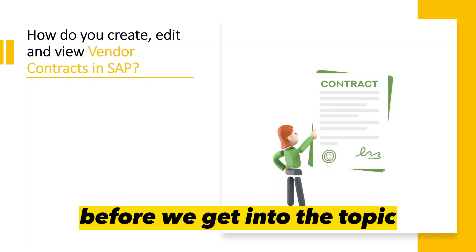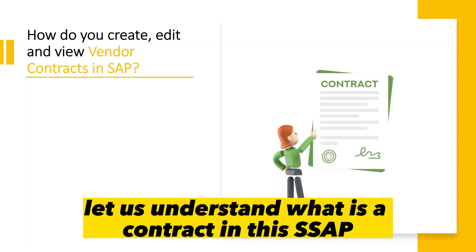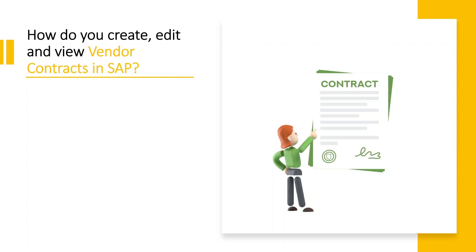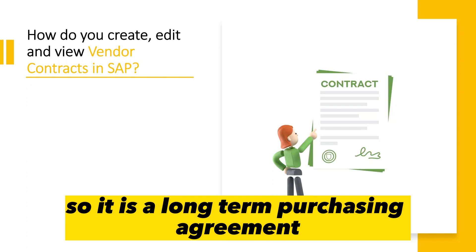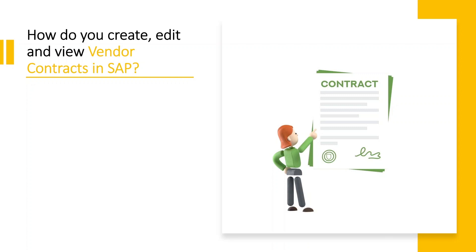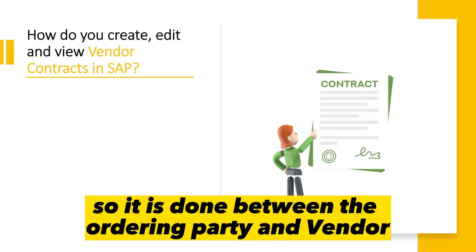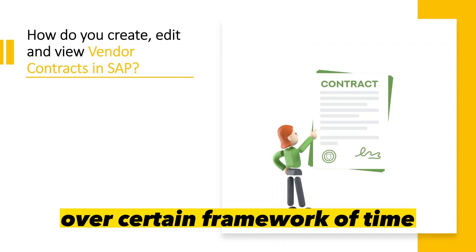Before we get into the topic, let us understand what is a contract in SAP. A contract is a type of outline agreement. An outline agreement is a long-term purchasing agreement containing certain terms and conditions. It is done between the ordering party and vendor over predefined material or services over a certain framework of time.